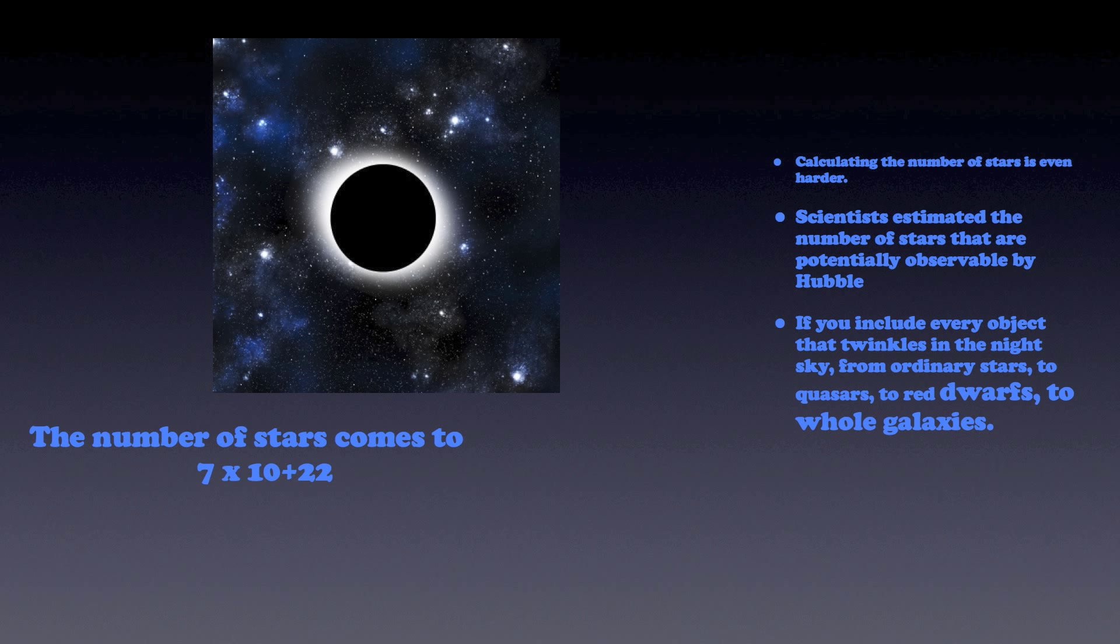So scientists upped the ante by estimating the number of stars that are potentially observable by Hubble. If you include every object that twinkles in the night sky, from ordinary stars to quasars to red dwarfs to whole galaxies, then the number of stars in the observable universe is astounding. The number is 70 sextillion stars, or you can say 7 × 10 to the power of 22 stars.